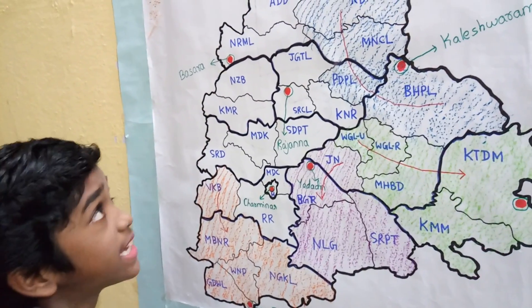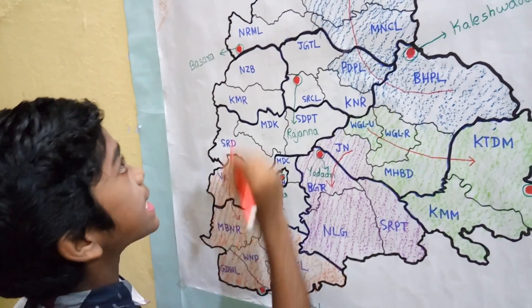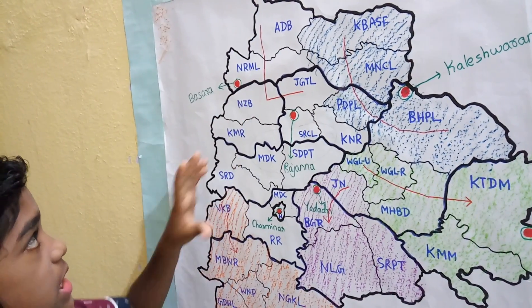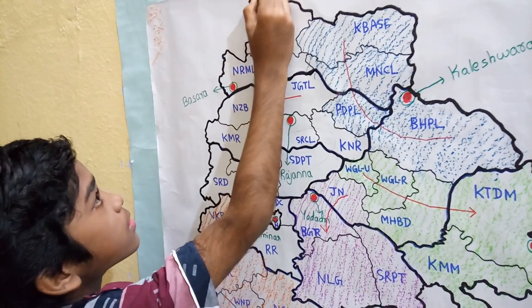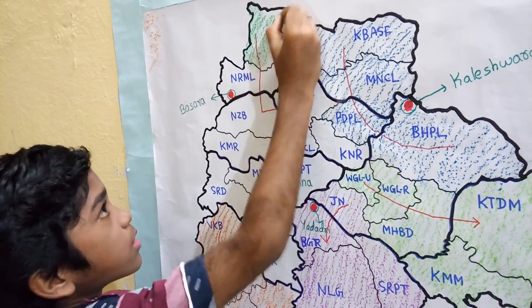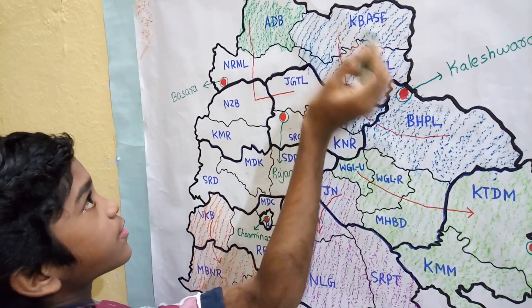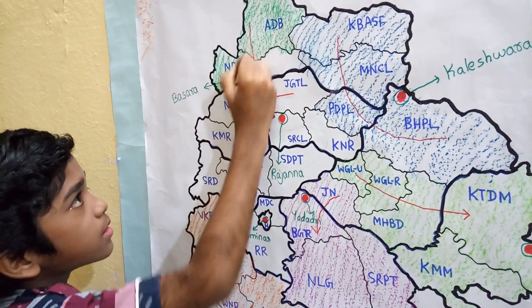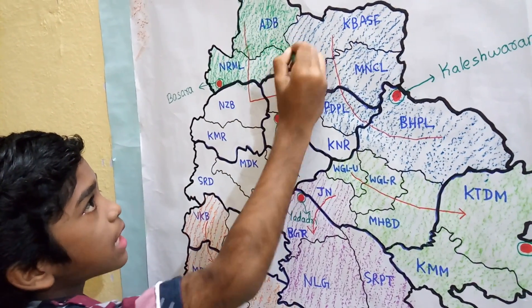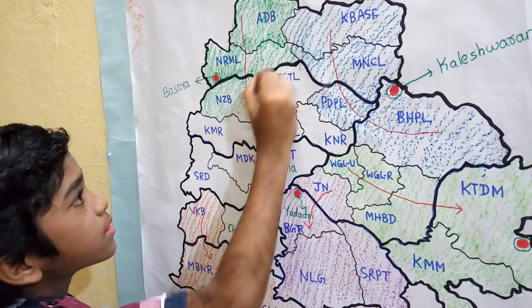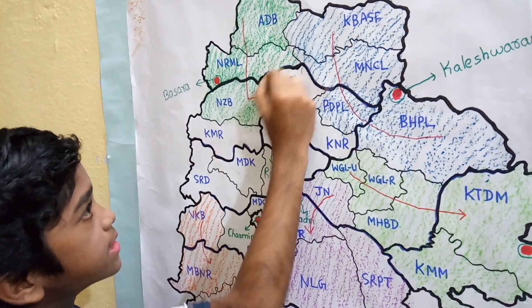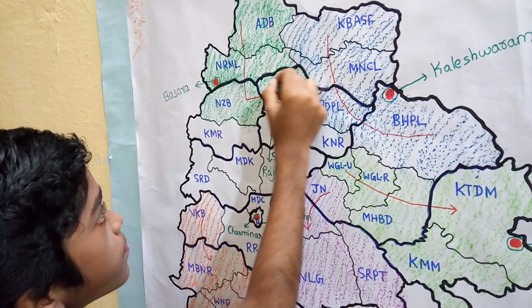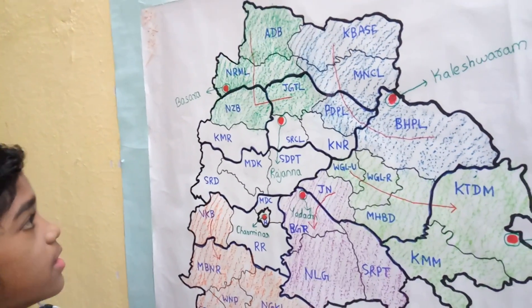Now, let us come here. Here we draw an L shape. This L covers 4 districts. These 4 districts come under Basara zone. Basara zone also has 4 districts like Kaleshwaram zone: Adilabad, Nirmal, Nizamabad, and Jagityal.